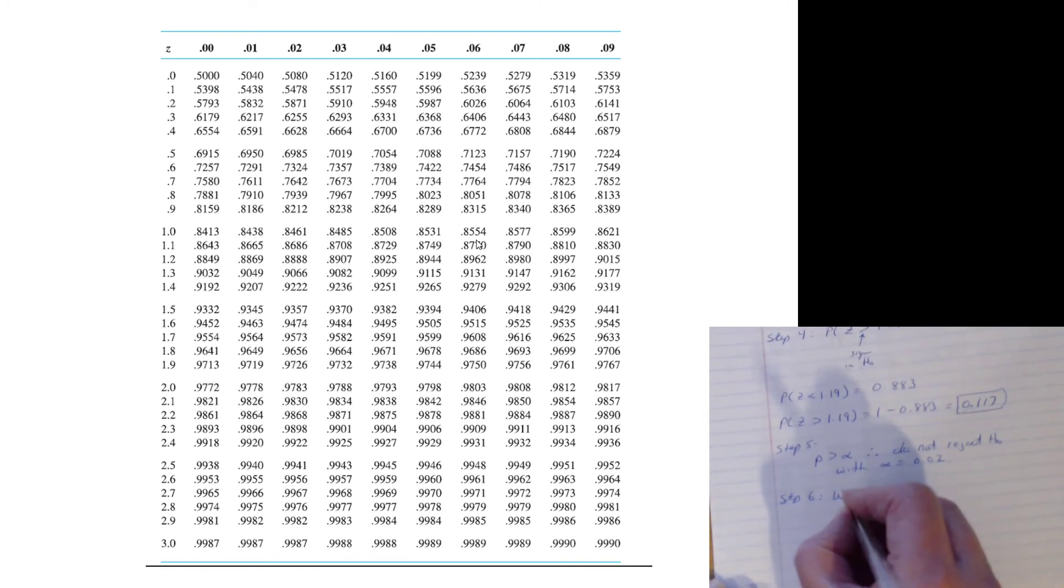So therefore, in step six, we can conclude that the average rent does not exceed $895. We've just essentially said, whatever's in HA, it ain't that.